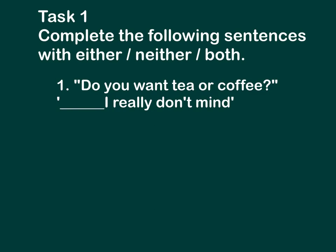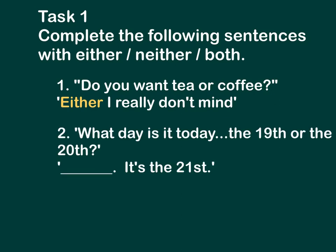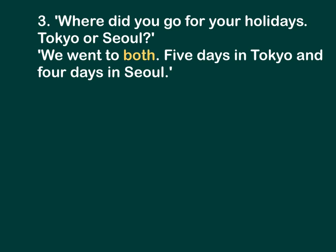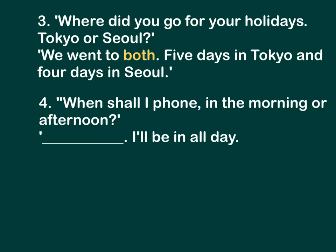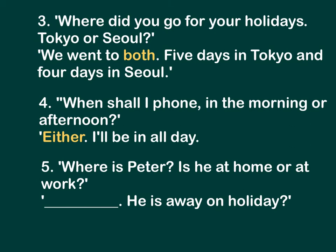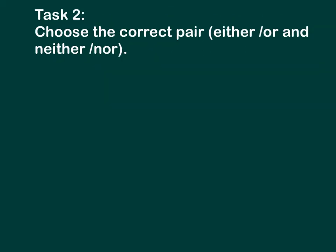Task 1 exercises: Do you want tea or coffee? — Either, I really don't mind. What day is it today, the 19th or the 20th? — Neither, it's the 21st. Where did you go for your holidays, Tokyo or Seoul? — We went to both: five days in Tokyo and four days in Seoul. When shall I phone, in the morning or afternoon? — Either, I'll be in all day. Where is Peter? Is he at home or at work? — Neither, he's away on holiday.